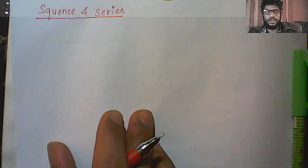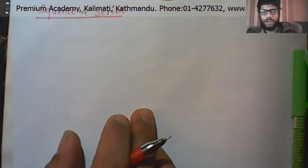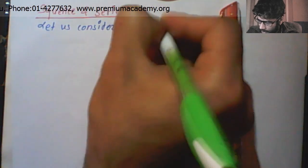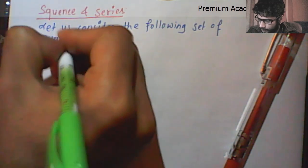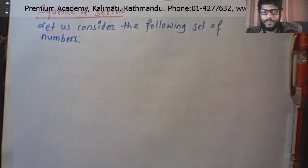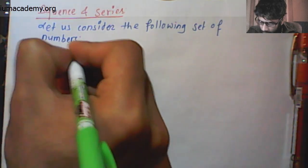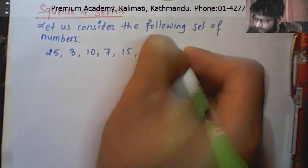Sequence and Series — the problem is the basic term. Let us consider the following set of numbers. In the beginning: 25, 3, 10, 7, 15, 20, 10, 10.